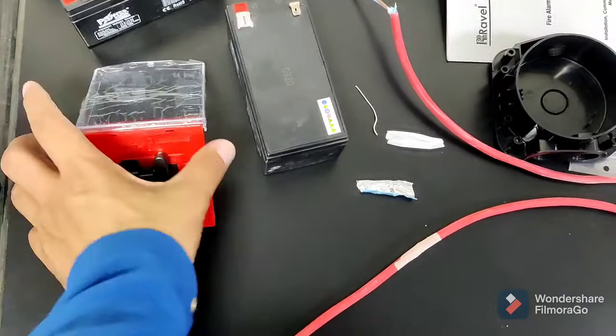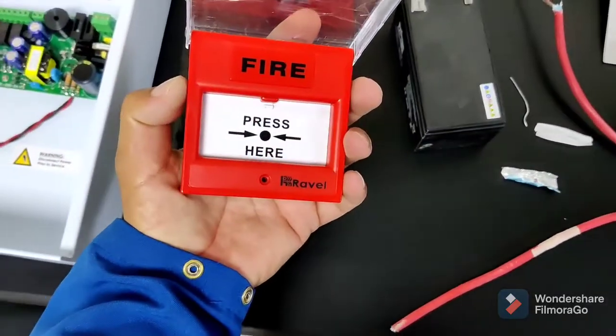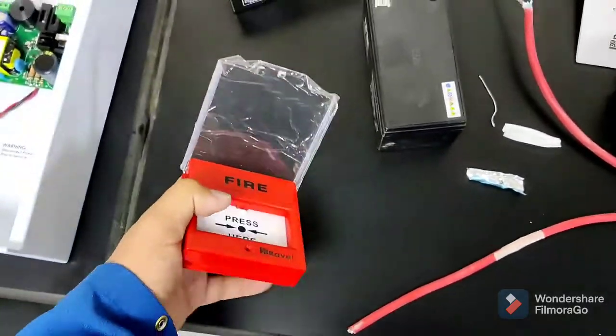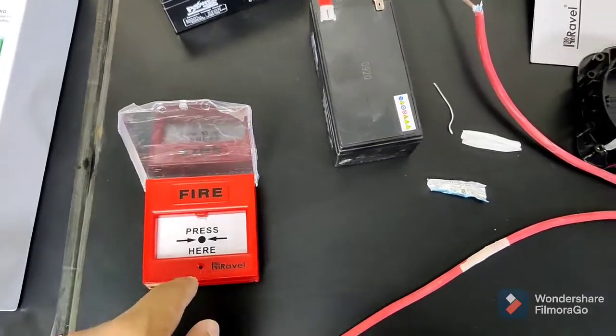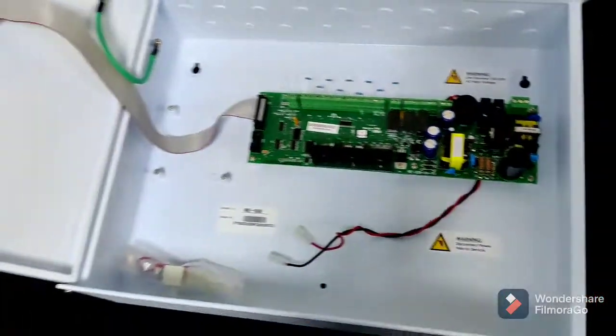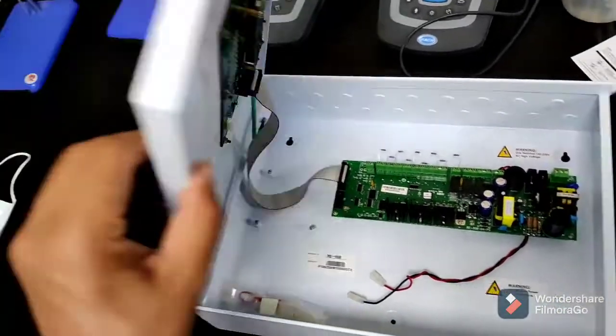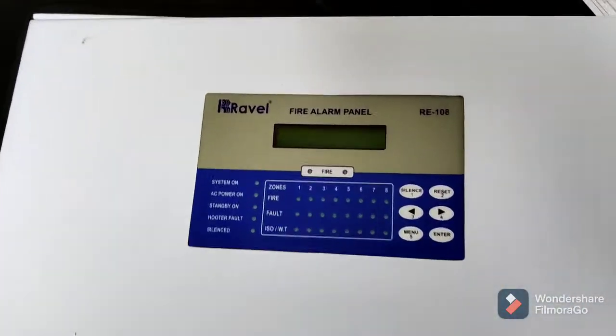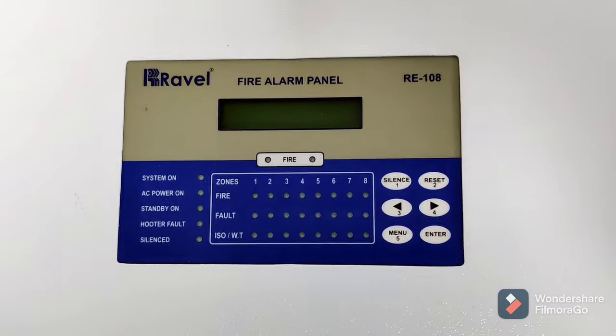This is a simple call point. You can see here it's a fire call point, simple one with two batteries. A 12-volt single battery can be connected here. And this is the panel, this panel is a fire alarm panel, Ravel.